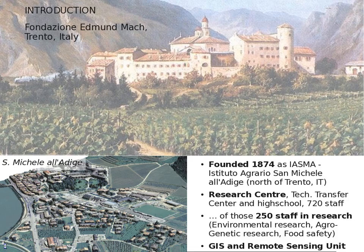First, a few words about the institution I work for and my work group. I work for the Fondazione Edmund Mach, located close to Trento, Northern Italy. It was founded in 1847 as Instituto Agrario San Michele Alarige. Today it consists of a research center, a technology transfer center, and a high school with more than 700 staff, of whom 250 work in research. I am the head of the GIS and Remote Sensing unit of the research center.